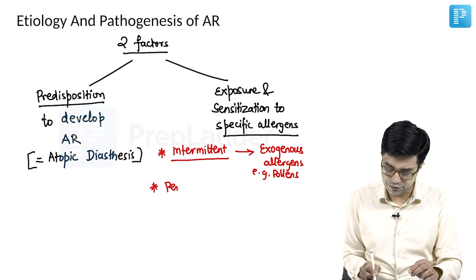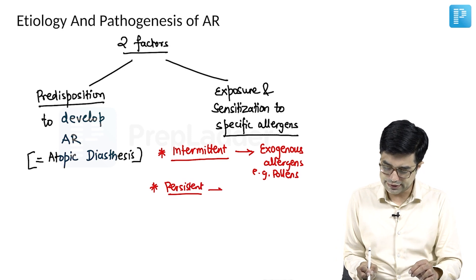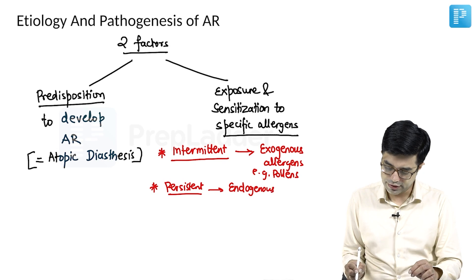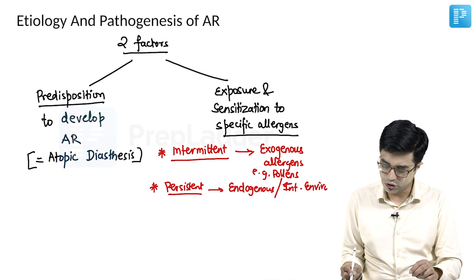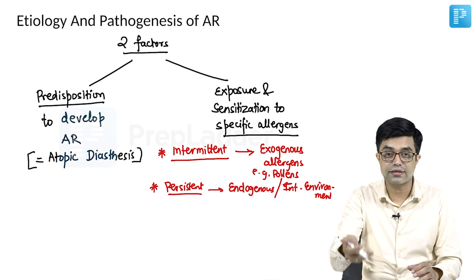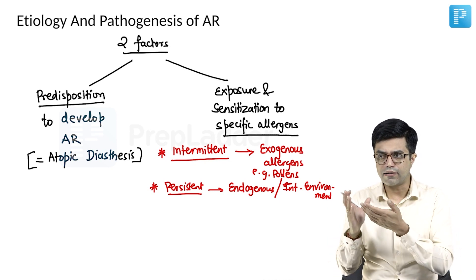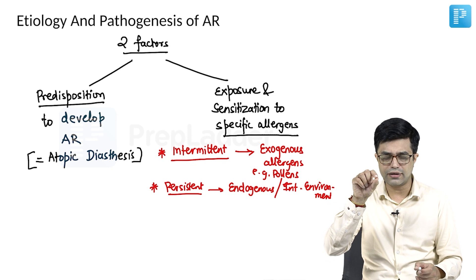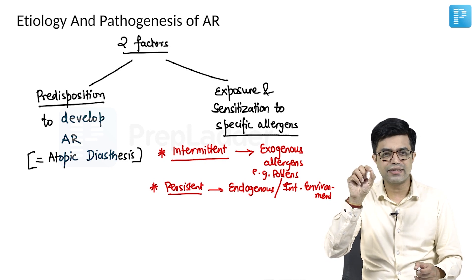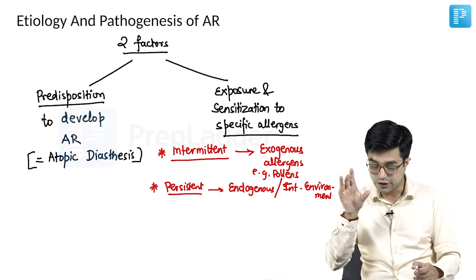Whereas children who have persistent symptoms — usually it is found that the allergens are endogenous or internal environment based. That is, they will be caused by cockroaches, rats, mice, mites, dust, danders, cats and dogs, lice, ticks and mites — exposure to those.